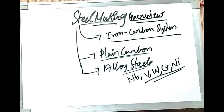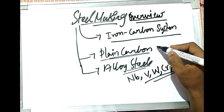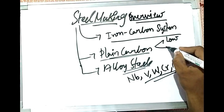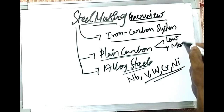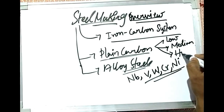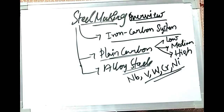We'll see what are the effects of these alloying elements, or effects of impurities if these are present in excess in plain carbon steel. Similarly, in plain carbon steel there are again three types: low carbon steel, medium carbon steel, and high carbon steel.